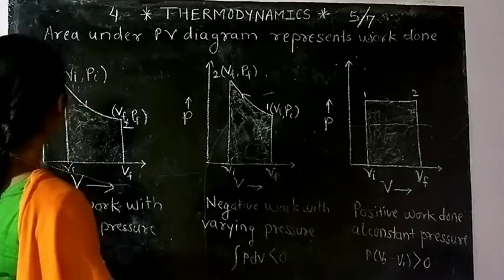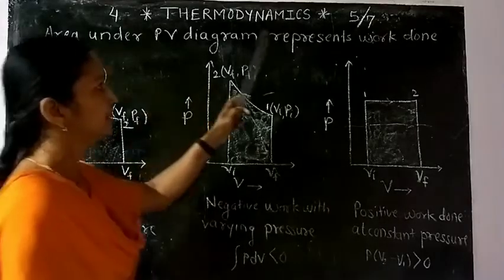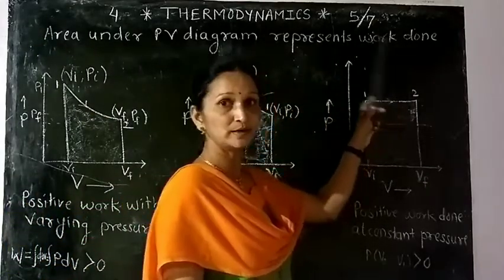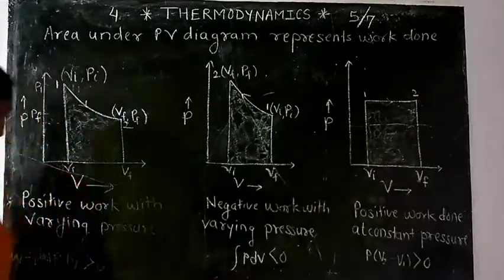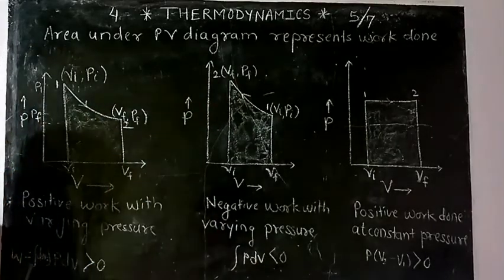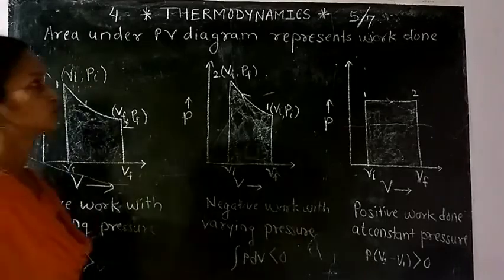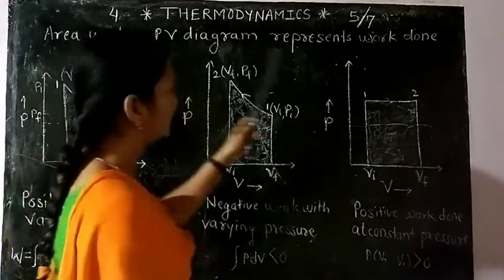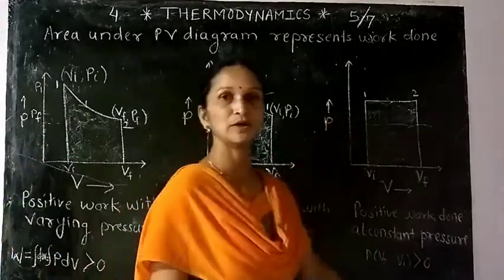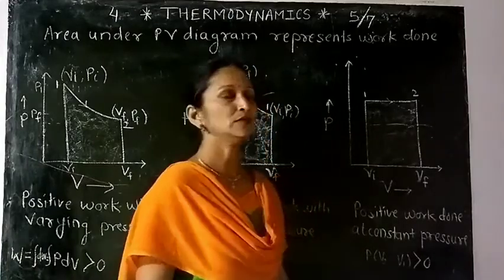The area under the PV diagram represents the work done. We know the equation: work done dW = ∫P dV. So the area under the PV diagram represents the work done during the thermodynamic process.